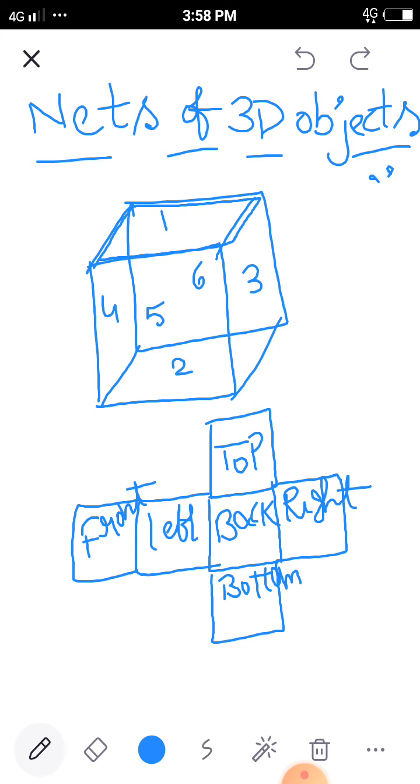This is not the final one net of the figure. By using this, we can draw net of a 3D object in 11 different ways. So any one of the way we can use and we can draw a net of a 3D object.